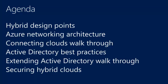Then we'll do a walkthrough of how to connect a common enterprise-class edge device — in this case a Cisco ASA — to Windows Azure. Really from start to finish: I've got a blank Windows Azure subscription and an unconfigured ASA. What are all the steps required to do that? Then we're going to look at Active Directory and do another walkthrough, and talk about some security best practices for the environment as well.